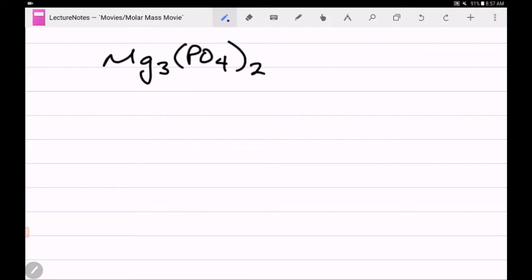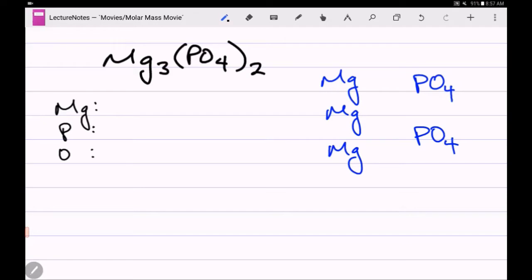What if you have parentheses to contend with? What does this mean? There's three magnesiums and there's two phosphates. So when you're totaling up the atoms, what do you do with the number outside the parentheses? Well, if you look at my picture, I've got three magnesiums, I've got two phosphoruses, and I've got eight oxygens. So what do you do with this number? You would multiply this by two and you would multiply this by two. Would you multiply the magnesium by two? No, because the two only applies to everything in parentheses.